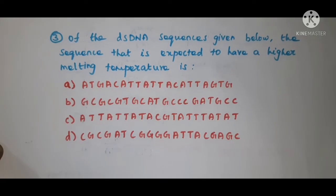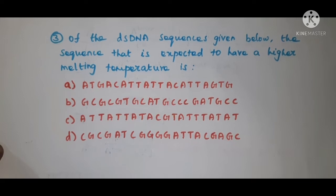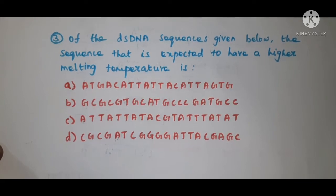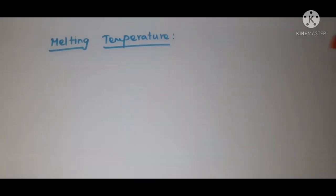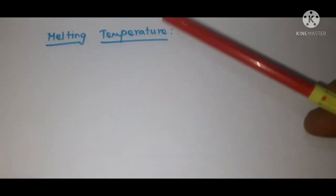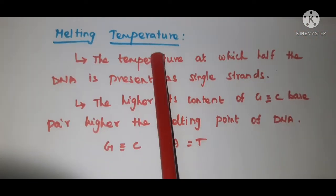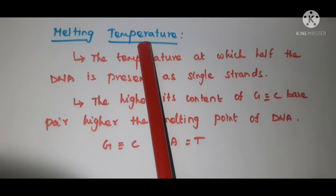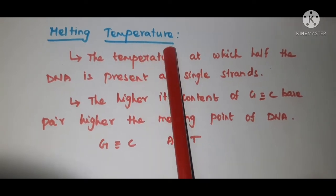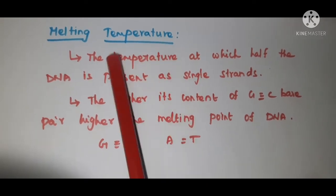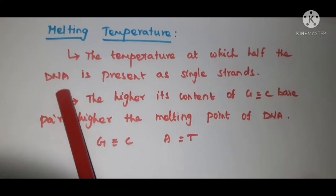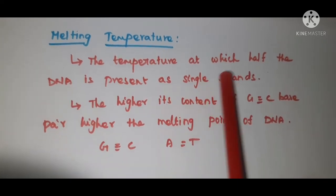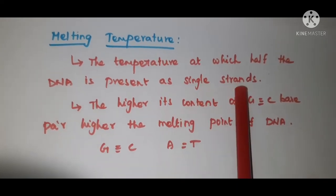Students, today we are going to identify the double-stranded DNA sequence which is having higher melting temperature. First, let us see what is melting temperature. Melting temperature is also known as denaturation temperature. That means, the temperature at which the double-stranded DNA is present as single strand.